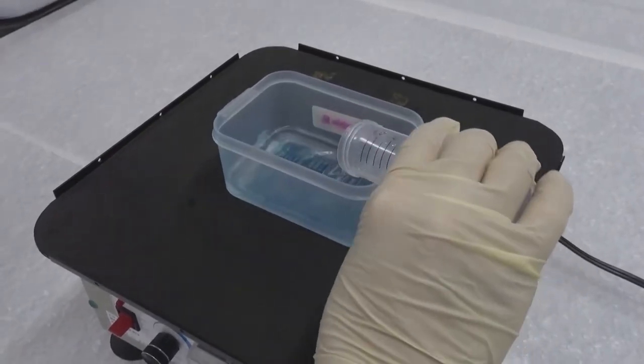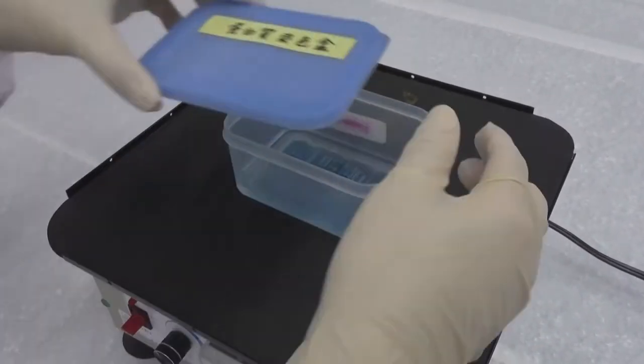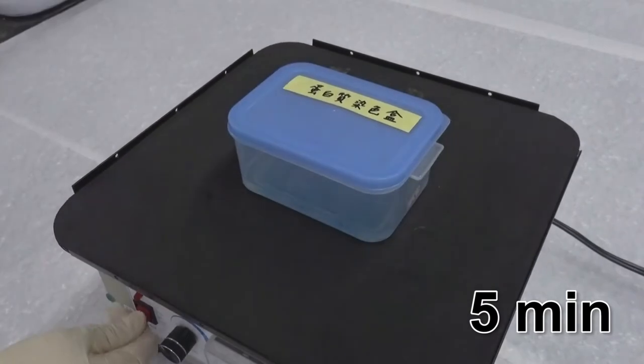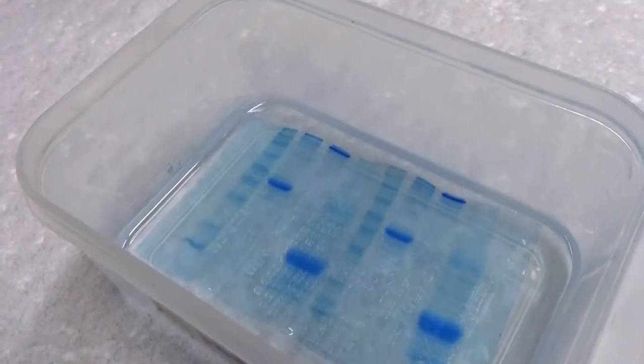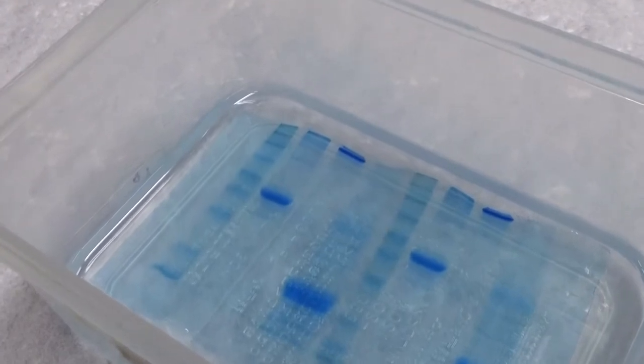Finally, add 25 ml deionized water to wash the gel with shaking for 5 minutes. By now, you can see blue protein bands appear in the gel.